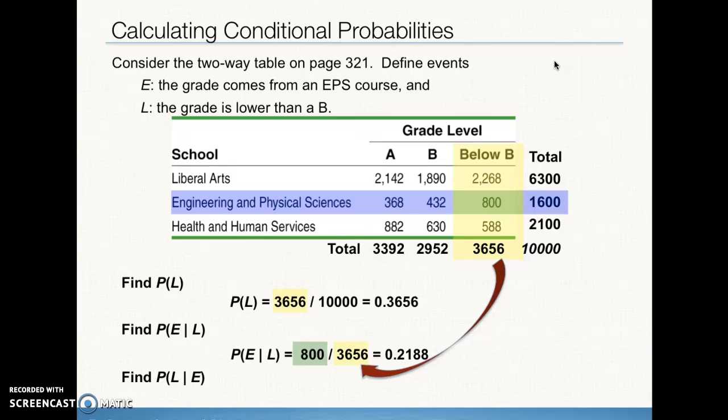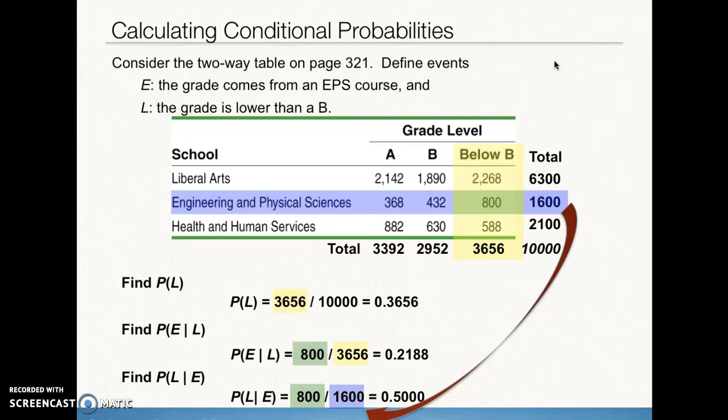And the probability of E given L, or the grade coming from an EPS course, knowing that it's lower than a B, means that our denominator is going to be the column total lower than a B. And our row total is going to be the engineering and physical sciences and below B, where they intersect at that 800 location. So 800 divided by 3656 gives us about 22% of the grades lower than a B are coming from the engineering and physical sciences school. Looking at it the other way, we're going to find the numerator is the same value. It's where the below B column and the engineering and physical sciences row intersect. But this time our denominator is different because we're taking the total of the engineering and physical science courses or grades, and we're looking at clearly half of the grades below a B are from the engineering and physical sciences. So we were correct in our initial impression of this two-way table.